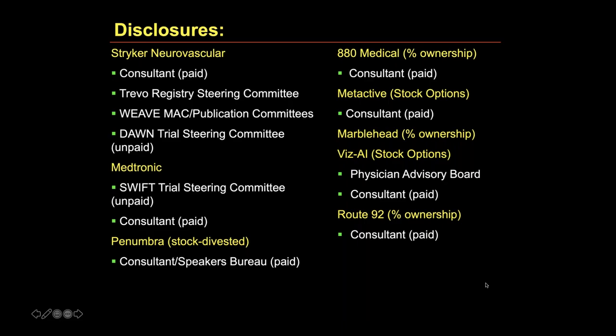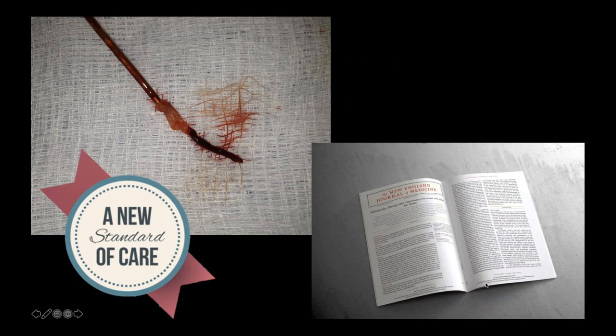These are my disclosures. I've been involved in developing the techniques in this care and helping to organize systems of care. Pretty much everyone is familiar that the standard of care for acute stroke patients with a large vessel occlusion changed back in 2015, with mechanical thrombectomy becoming the new standard of care — which was a great thing.